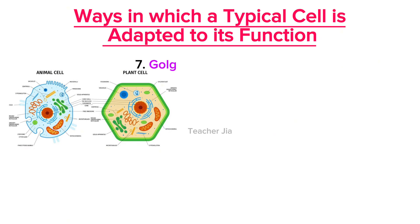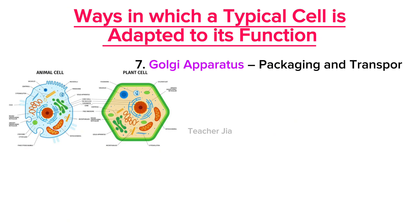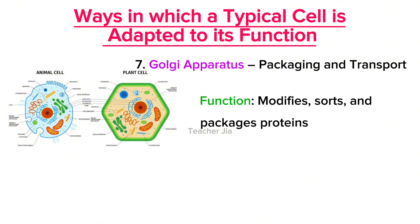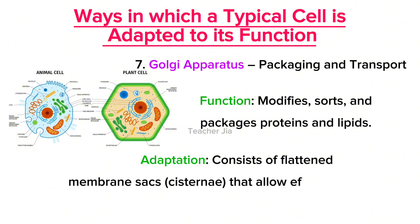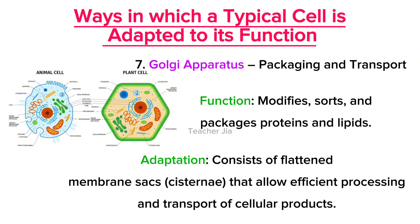Next is the Golgi apparatus, which is involved with packaging and transport. Its function is that the Golgi apparatus modifies, sorts, and packages proteins and lipids. Its adaptation is that it consists of flattened membrane sacs known as cisternae, that allow efficient processing and transport of cellular products.